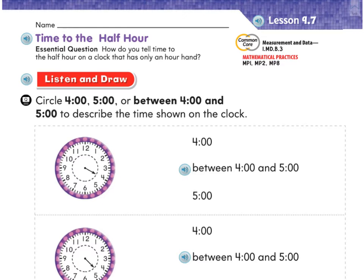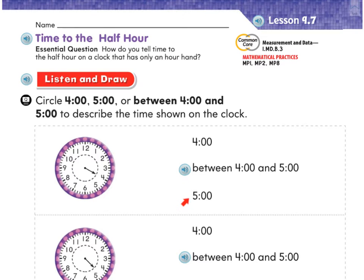I'm on page 549 right now — go ahead and turn there with me. It says circle four o'clock, five o'clock, or between four o'clock and five o'clock to describe the time shown on the clock. We have a clock here and we can see where it's pointing. Is it pointing directly to the four, so that it's four o'clock? Is it pointing between four o'clock and five o'clock? Or is it pointing to five o'clock?